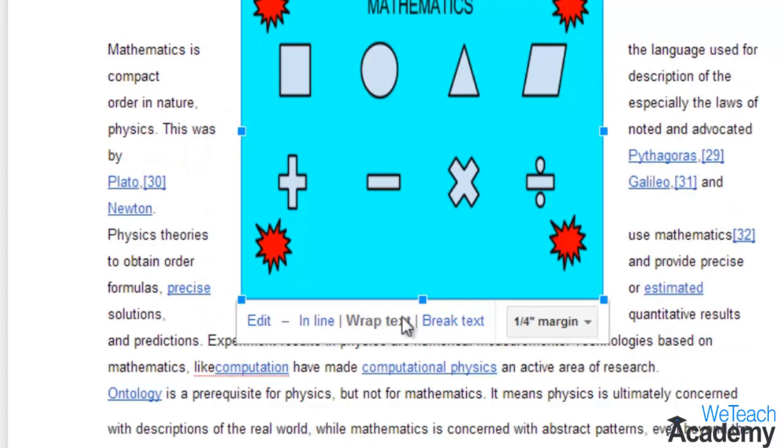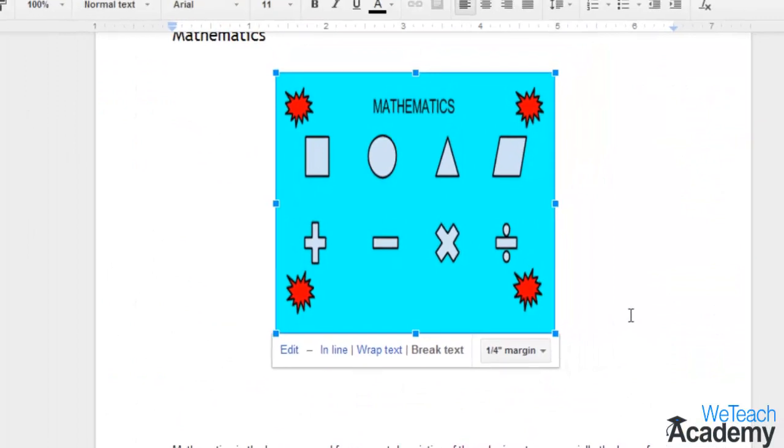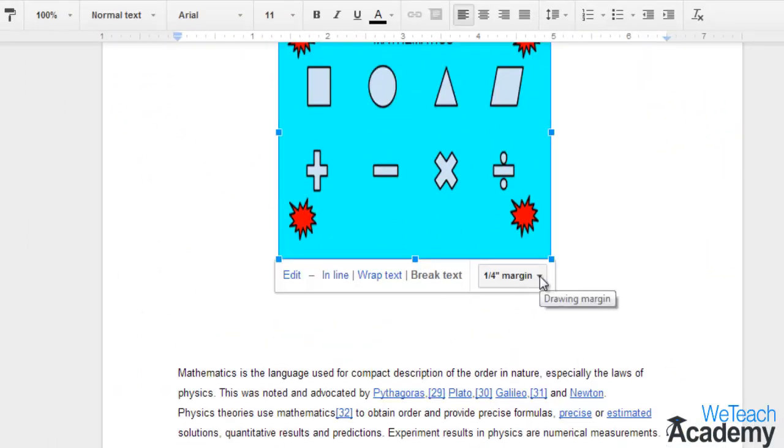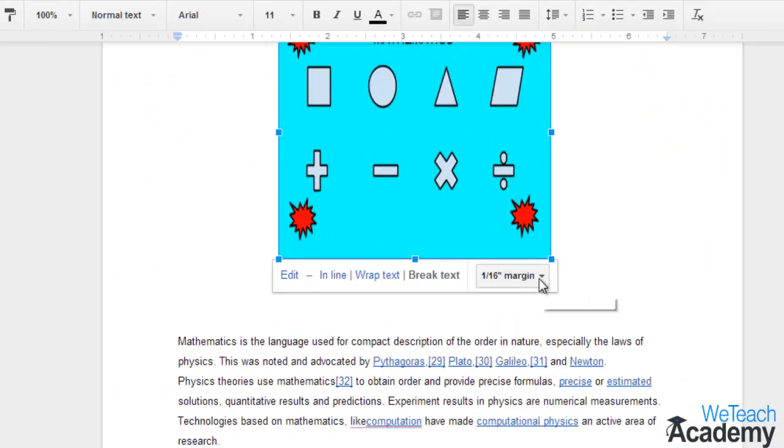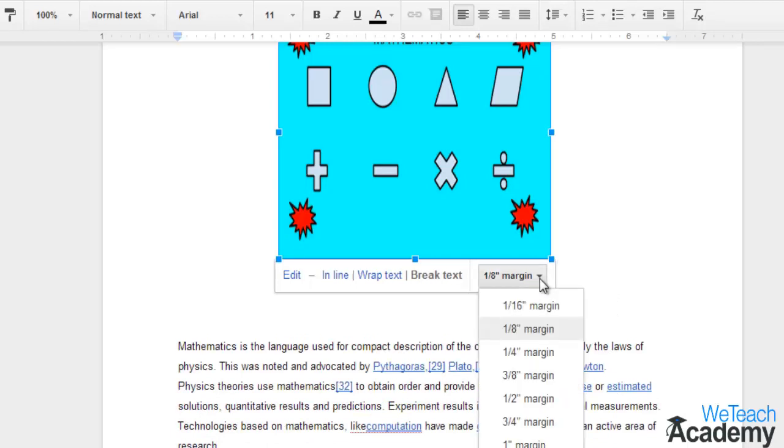'Break text' means you can position your image by breaking the lines of your document—that is, the image will appear in between the lines of your document, and you can set the margins according to your preferences.